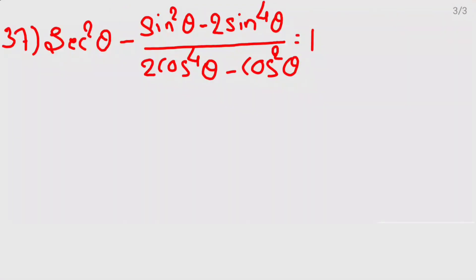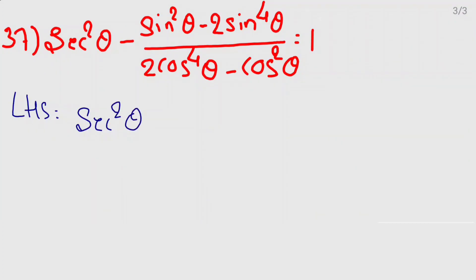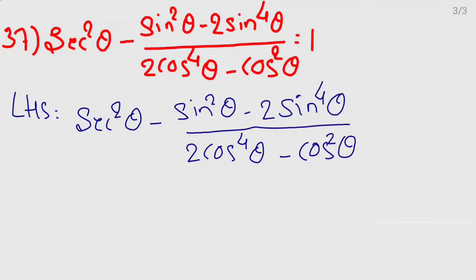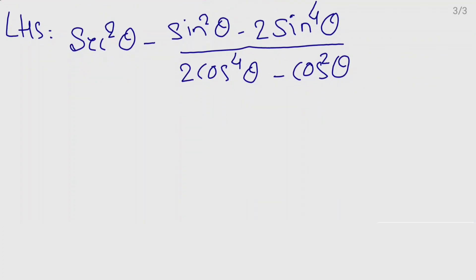Now the next problem: sec²θ minus sin²θ minus 2sin⁴θ divided by 2cos⁴θ minus cos²θ. First, write down the LHS: LHS is equal to sec²θ minus sin²θ minus 2sin⁴θ, divided by 2cos⁴θ minus cos²θ.